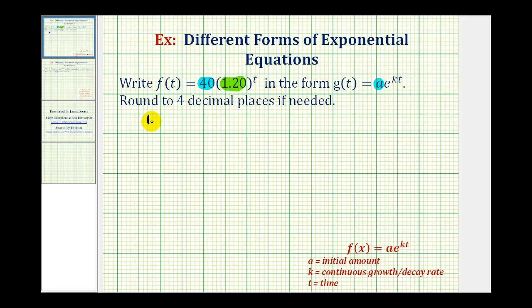So in this case, we would have 1.20 - 1 = 0.20 or 20%. So if t was in years, we would have a 20% exponential growth rate per year.